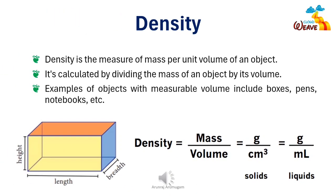Let's begin by understanding the fundamental concept of density. Density is simply the measure of mass per unit volume of an object. In simpler terms, it tells us how much stuff is packed into a given amount of space. For example, if we have a box with a certain mass, we can calculate its density by dividing the mass by its volume.